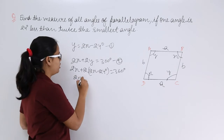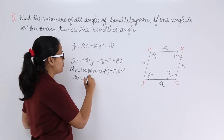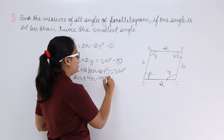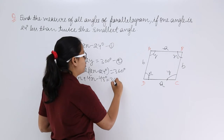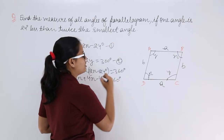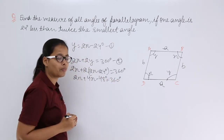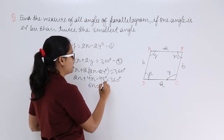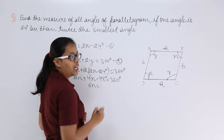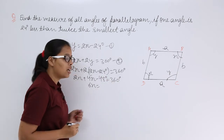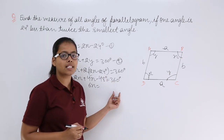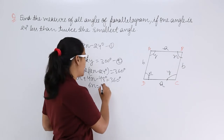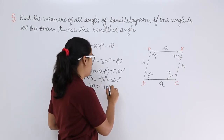Solving further, this becomes 4x − 48 = 360. Combining, 2x + 4x gives 6x, and when 48 moves to the right-hand side it adds to 360, giving us 6x = 408.